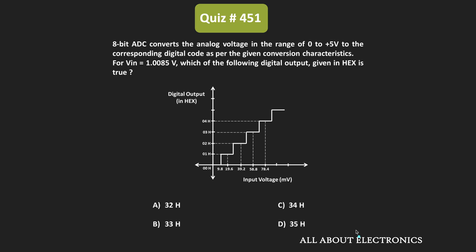Hey friends, welcome to the YouTube channel All About Electronics. In this question, we have been given the transfer characteristic of an 8-bit ADC, with an input voltage range from 0 to +5V. We have been asked to find the digital output code for the given input.